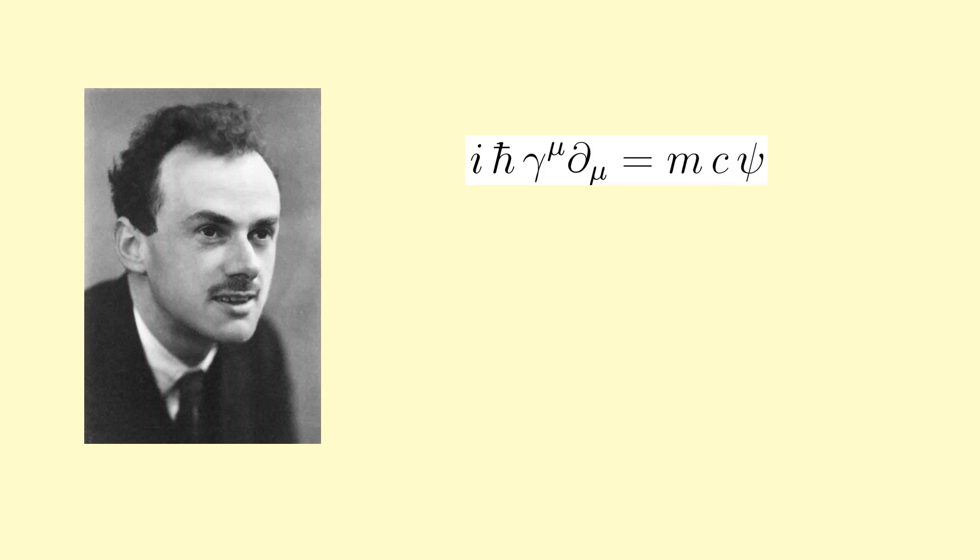This is Paul Dirac and this is the equation called the Dirac equation. You don't need to know what it means, but he basically used it to predict the existence of antimatter.